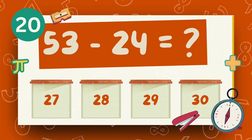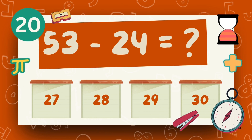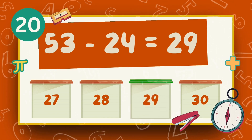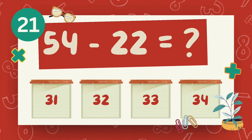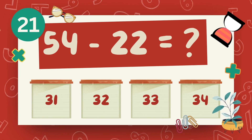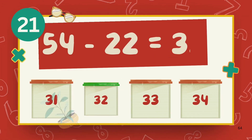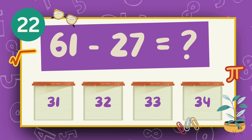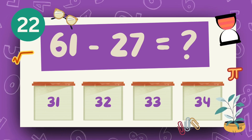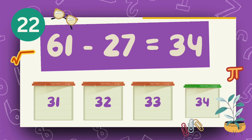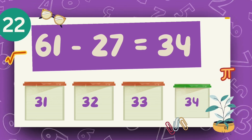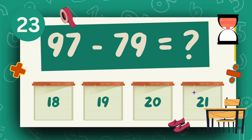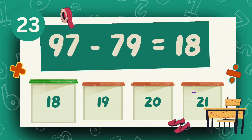What is 53 minus 24? The answer is 29. What is 54 minus 22? The answer is 32. What is 61 minus 27? The answer is 34. What is 97 minus 79? The answer is 18.